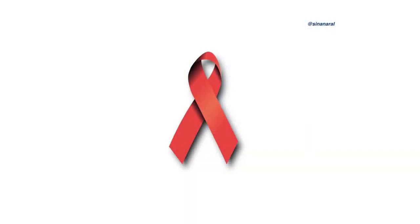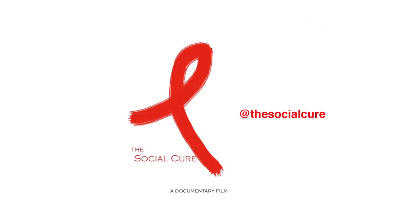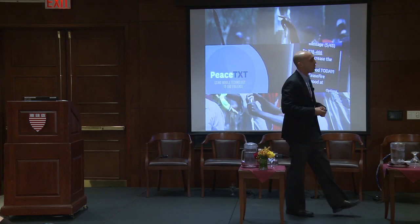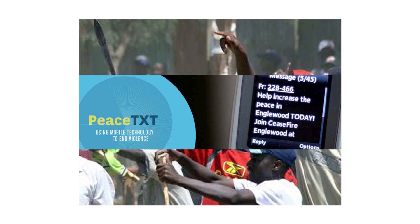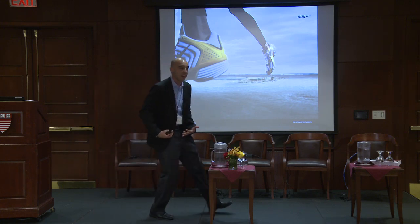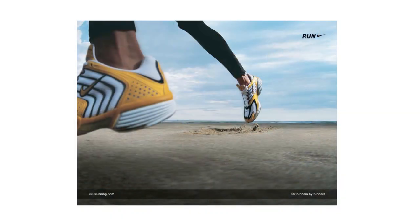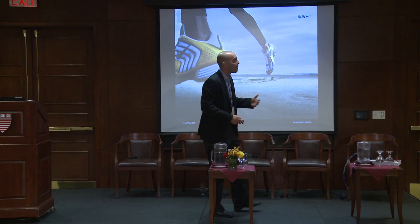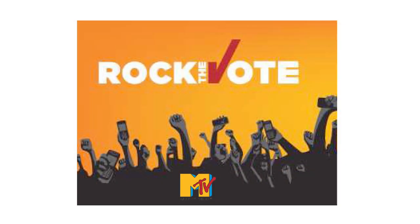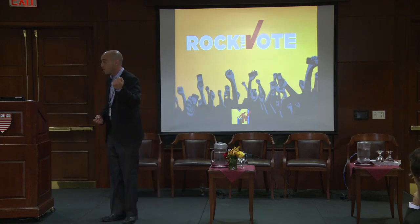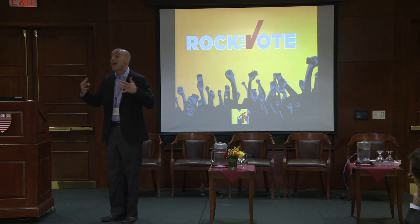We're applying this technique to spread HIV testing in South Africa — a movie about this is being made called The Social Cure. We're applying it to combat election violence in Kenya through an organization called Peace Text, sending positive socially cohesive messages to reduce violence and killings especially during election time. We're working with Nike to understand how one person's running behavior affects their peers' running behavior when data is recorded in the shoe and socialized through Facebook. And we're working with MTV to use the power of peer influence in social networks to get people out to vote. My one argument is that combining our understanding of networks with our understanding of social influence can have dramatic effects on public policy.